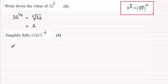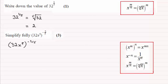Now for the next one, we need to simplify (32x^5)^(-2/5). This requires quite a few rules which are summarized here.